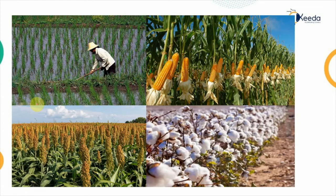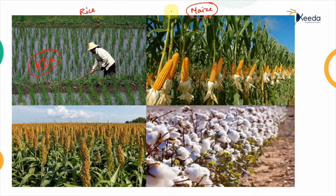The first crop shown in the images is rice — the field is completely flooded with water because a high amount of water is required for its growth. The second is the maize crop, which requires similar weather but less depth of water than rice. The third is sorghum or jowar, dominant in dryland areas. The fourth is cotton — the cotton flowers shown are completely grown, so these images help build pictorial memory of the crop types.